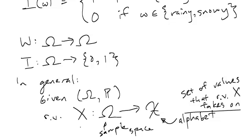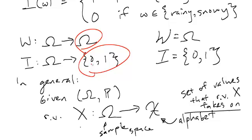Back to our previous example, W takes on values in the alphabet, which is just the sample space: sunny, rainy, snowy. Whereas I took on values in the set, so is equal to 0, 1. This is basically, these are the alphabets for these random variables.